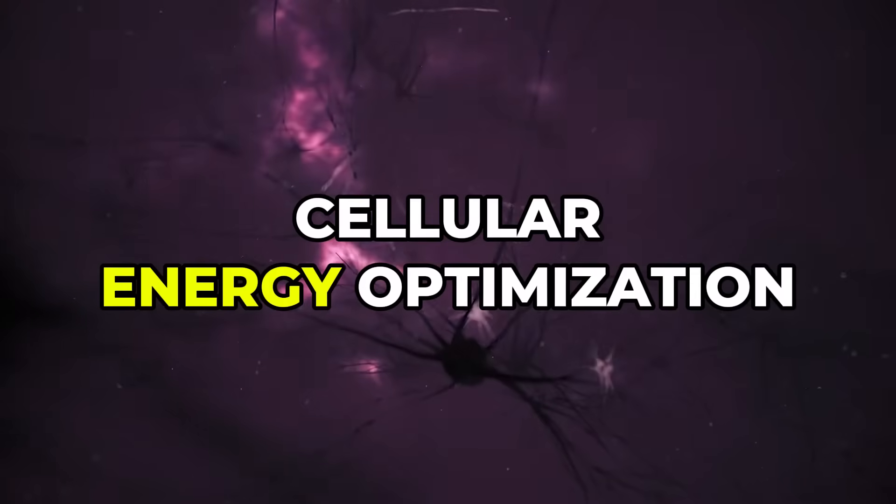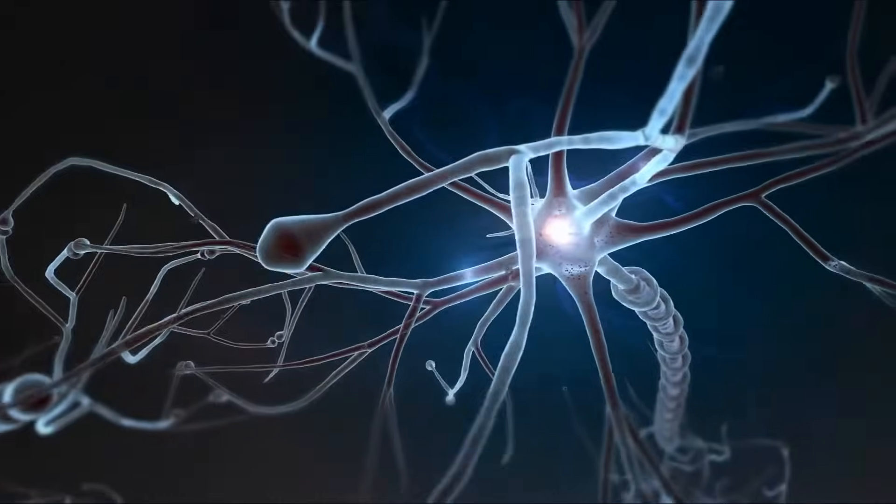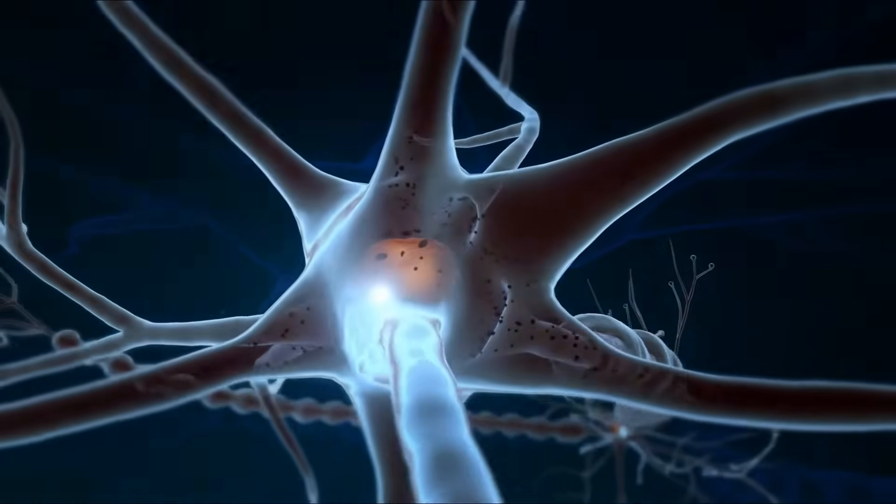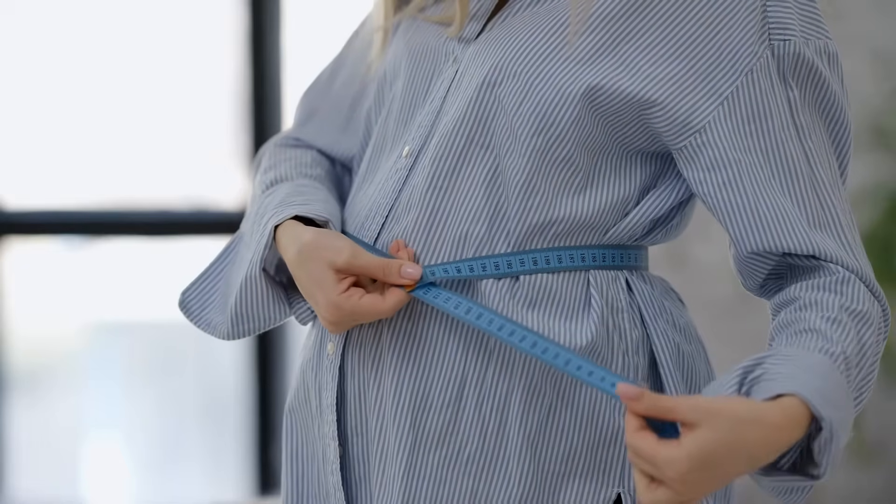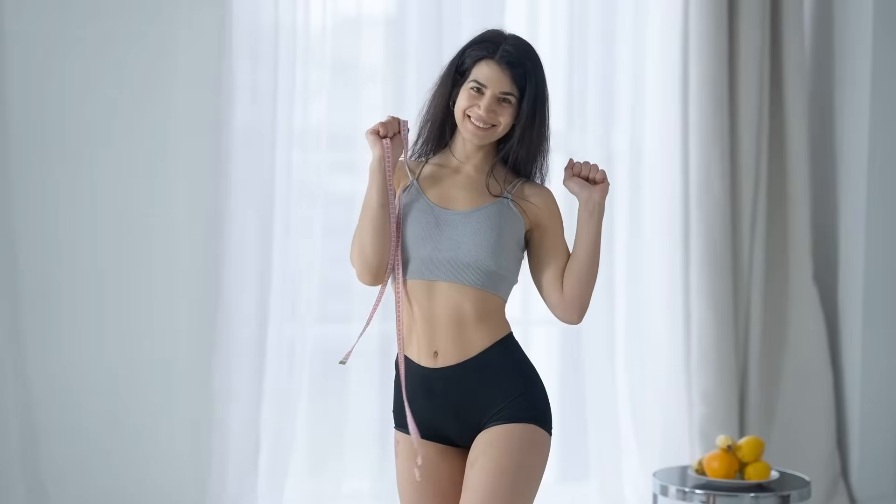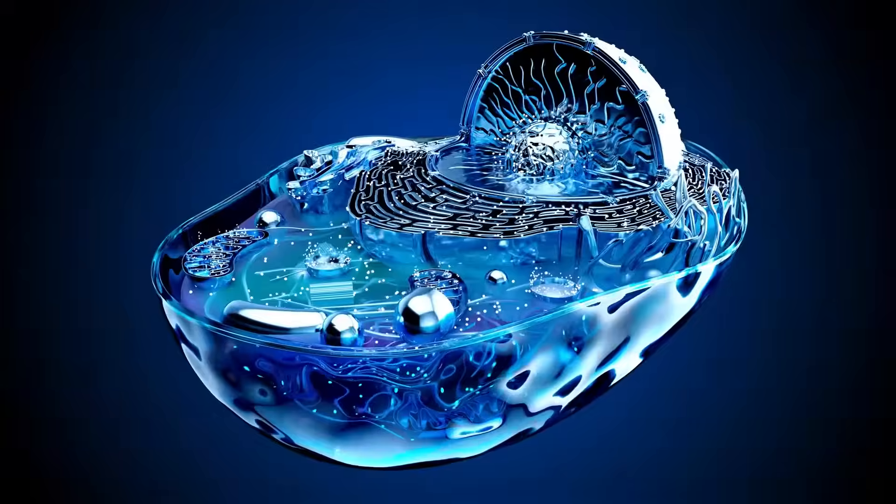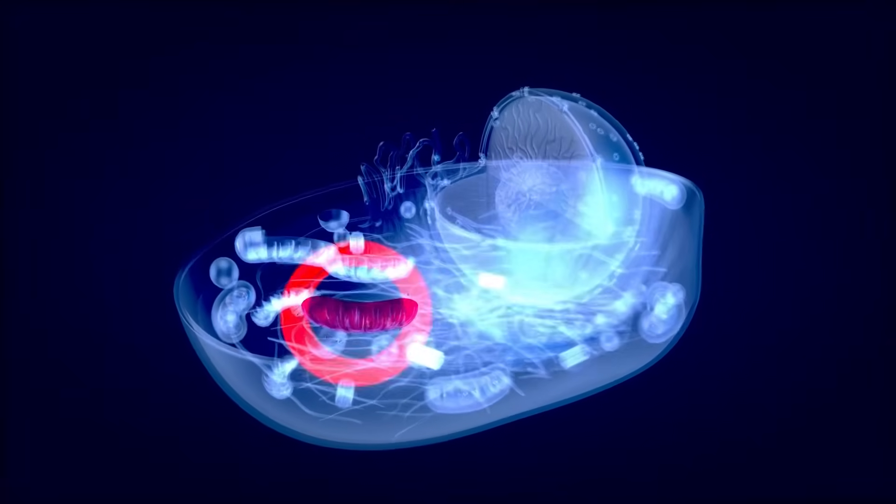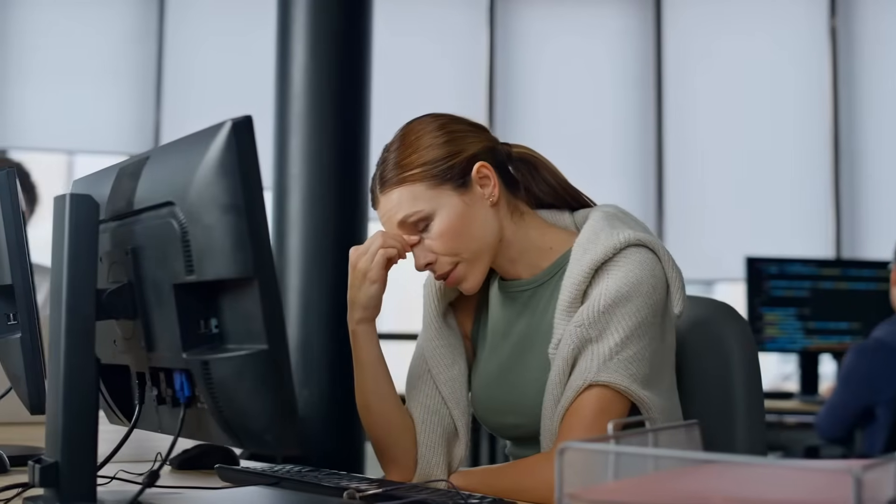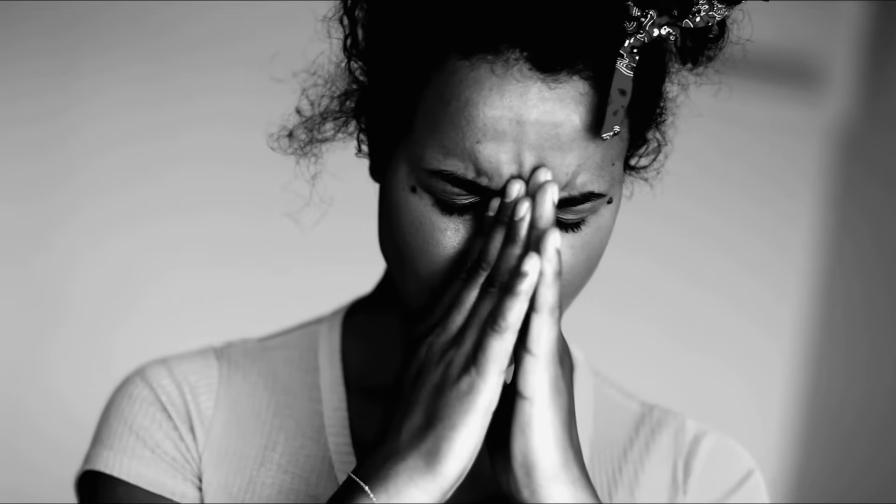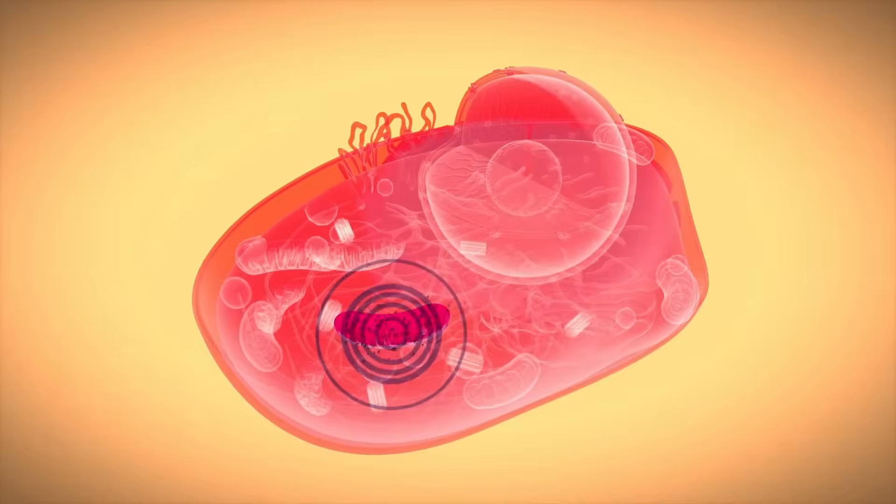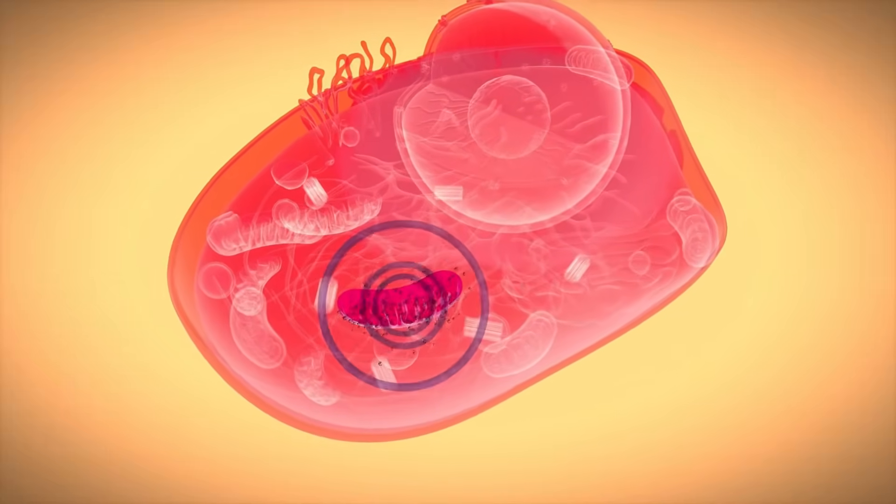The third strategy is boosting cellular energy. Your brain uses about 20% of your body's total energy, even though it only accounts for 2% of your body weight. That's a huge demand. The mitochondria inside your brain cells are responsible for producing that energy. When they're damaged or overwhelmed, mental function collapses. This is why people with depression or chronic stress often feel exhausted. Their cells aren't making enough energy. To fix this, you need to support your mitochondria.